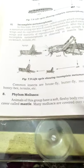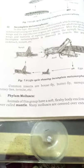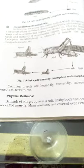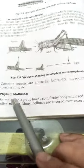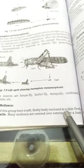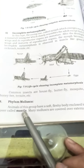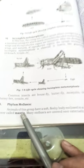My name is Dr. Asan Malik and today our topic is Phylum Mollusca. Animals of this group have a soft, fleshy body enclosed in a thin, fleshy cover called the mantle.